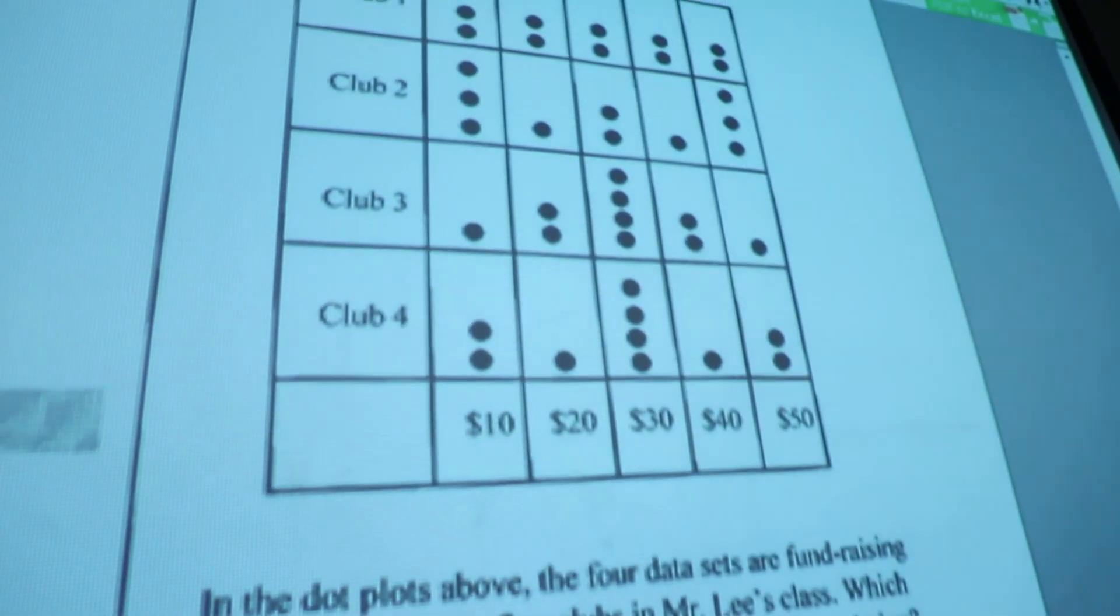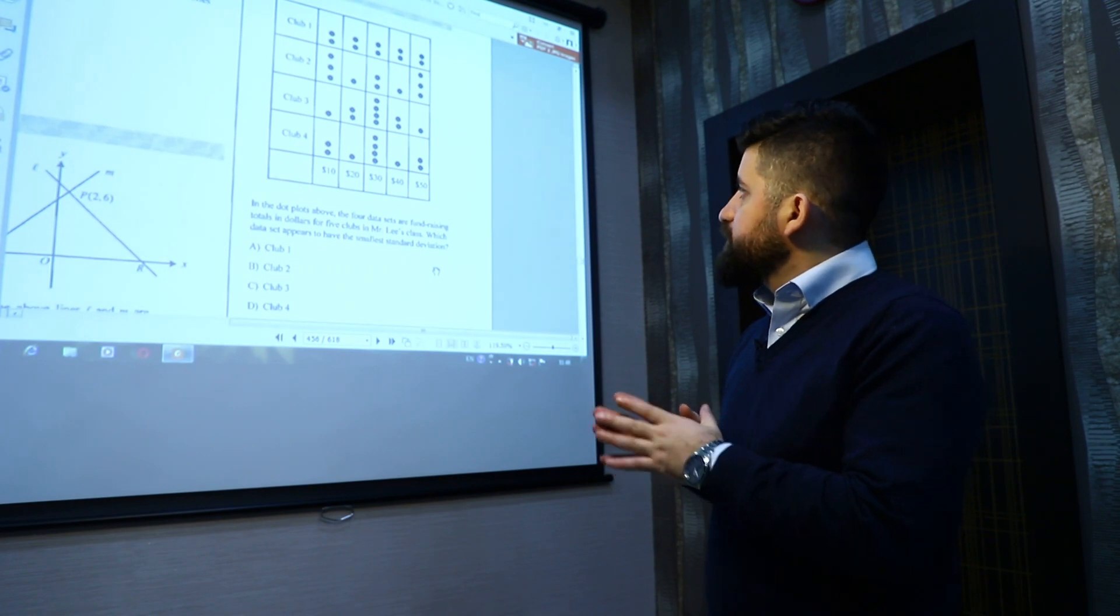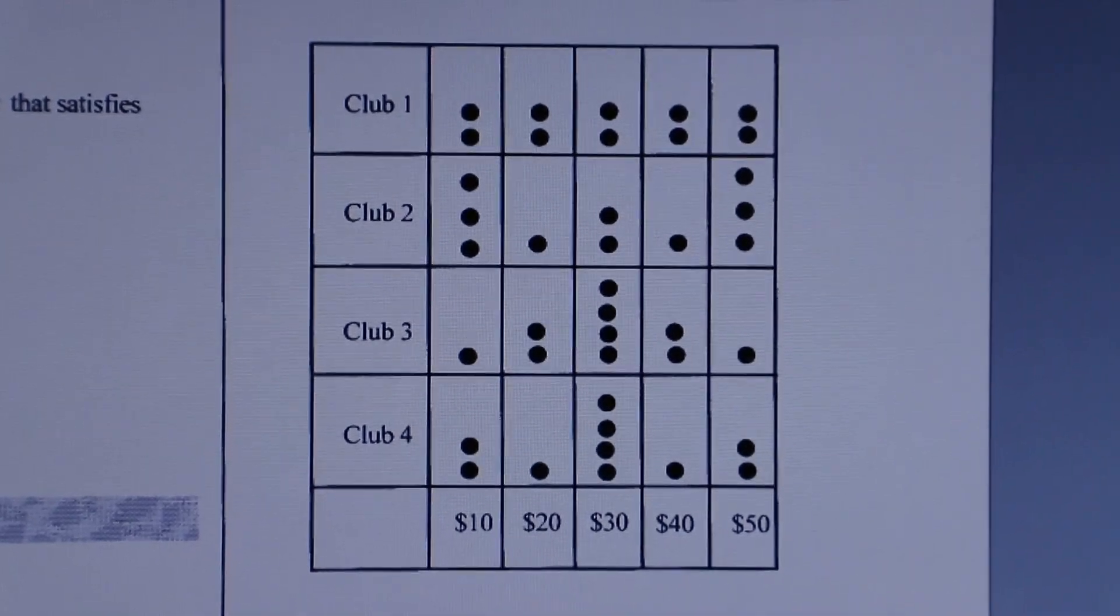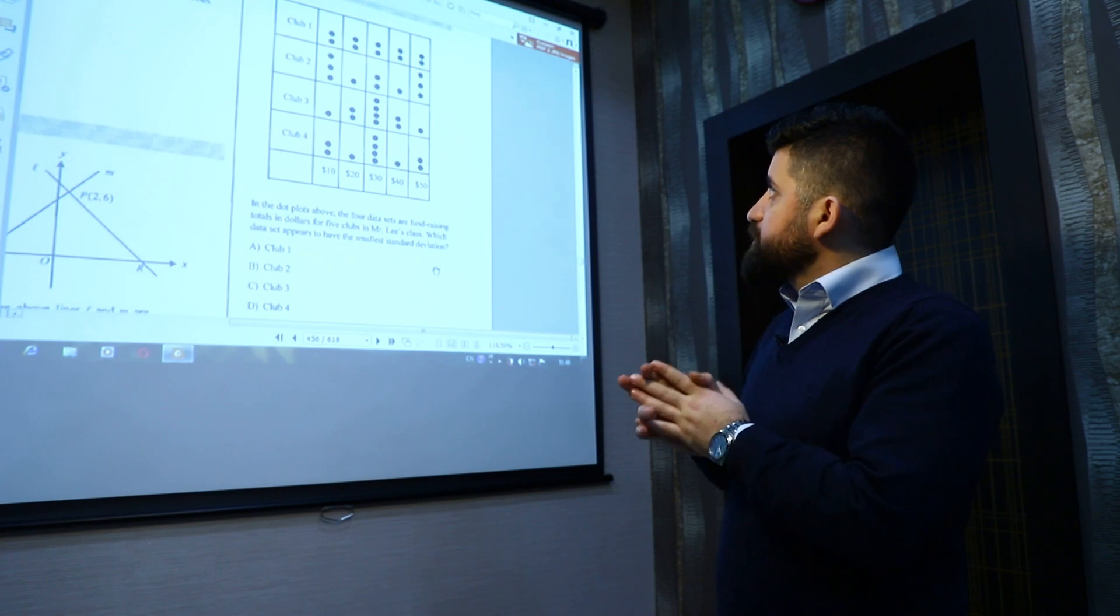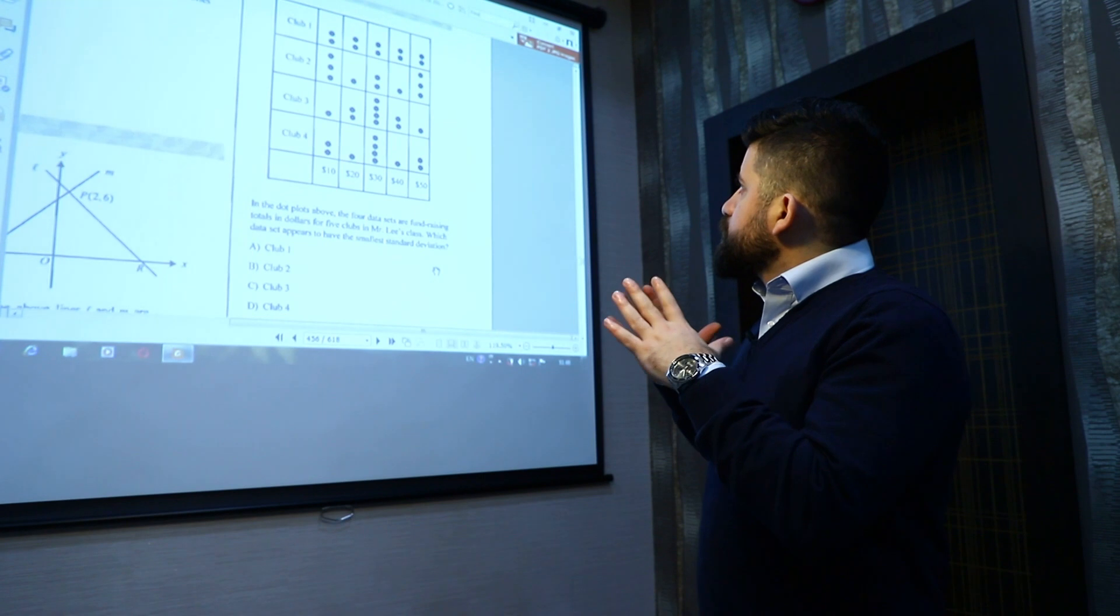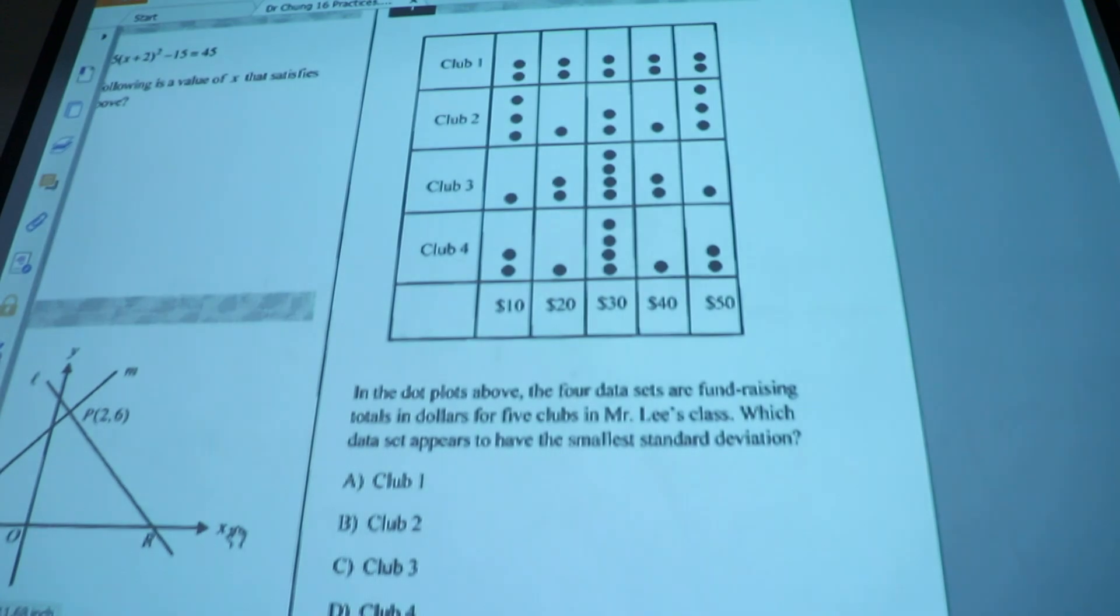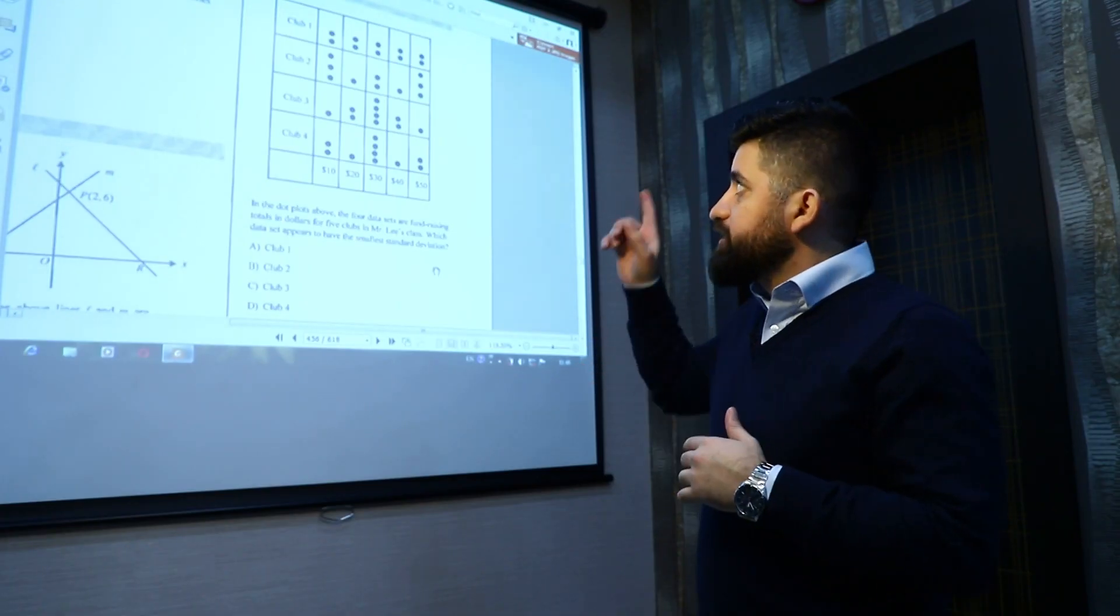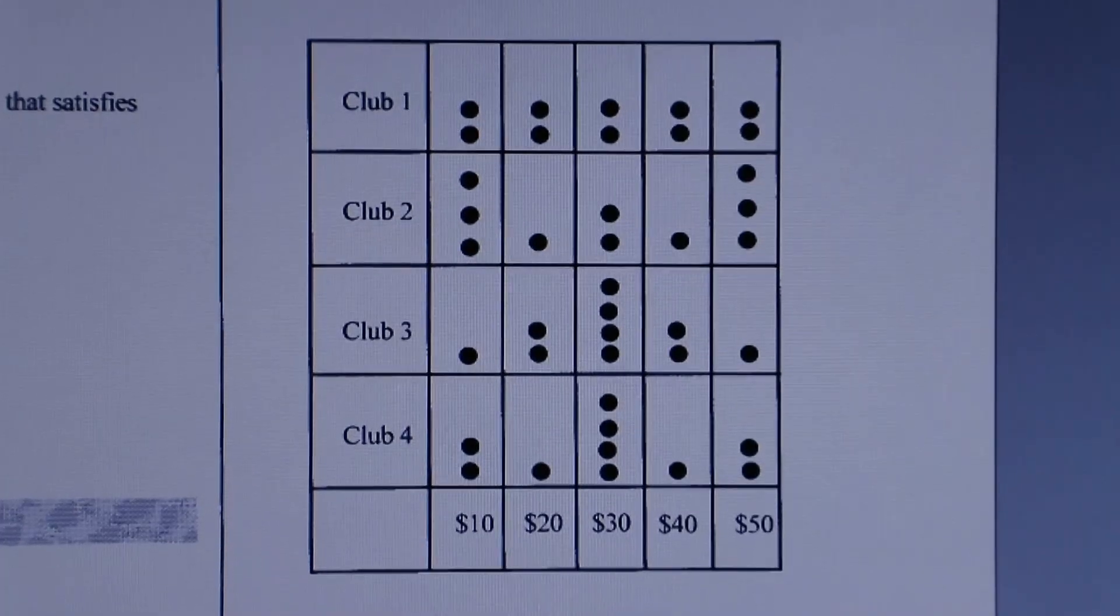When we compare club three with club four, in club four the standard deviation is also small but not smaller than club three. So in this table, club two has the greatest standard deviation where the data are more spread out, then club one, then club four, and then club three, from greatest to least.